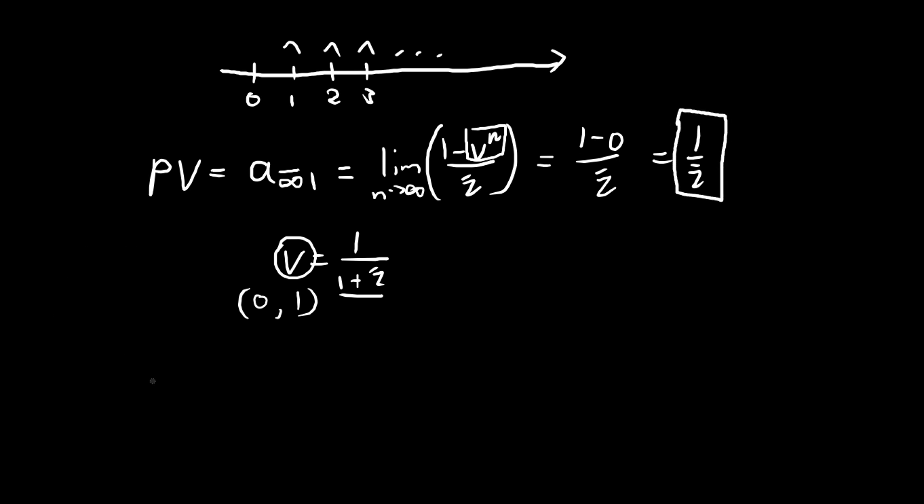We can do the same thing for our annuity due. If the payments happen at the beginning of each period, we have by the same logic the same formula except that denominator is now d, and then by the same logic we get 1 over d. This is the present value of our perpetuity due.